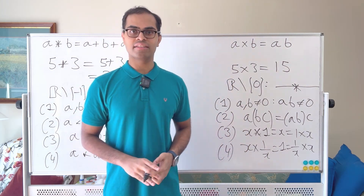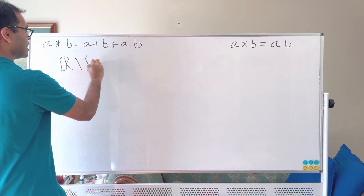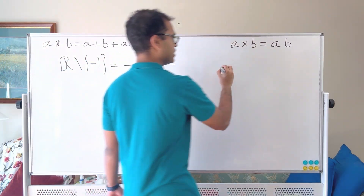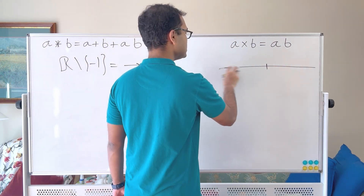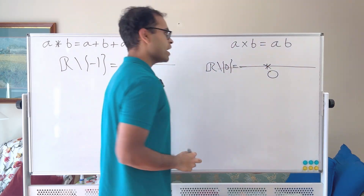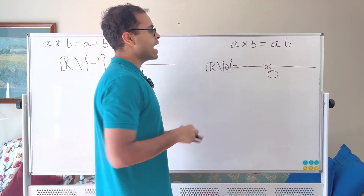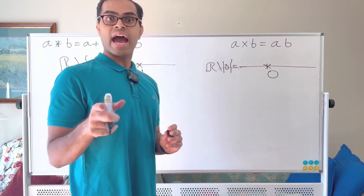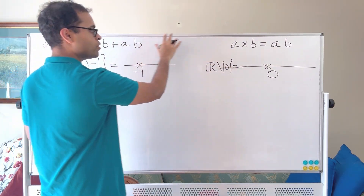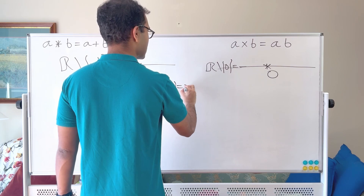The board is empty now, so let's see what the disguise is. This ★ operation is on ℝ \ {−1}, the number line with −1 deleted, and multiplication is on ℝ \ {0}, the number line with 0 deleted. In both cases, we delete the problematic element so that everything has an inverse. These are both groups. Now here's the disguise: I'm going to define a function f with input from ℝ \ {−1} and output in ℝ \ {0}, and that function is f(x) = x + 1.